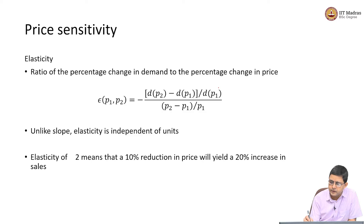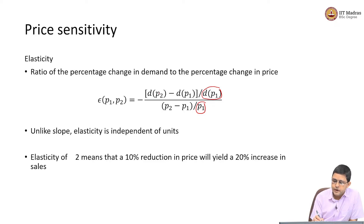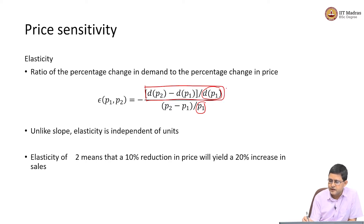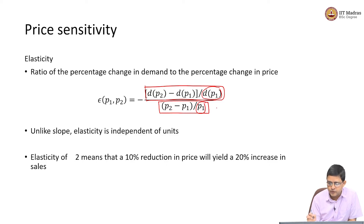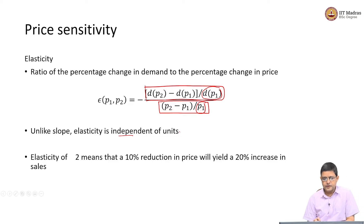To compute elasticity, you divide the numerator by demand at P1, and divide the denominator by price P1. The numerator becomes a unitless quantity because you are dividing demand by demand — the units cancel out. Similarly, the denominator becomes unitless because it is price divided by price. So unlike slope, elasticity is a unitless quantity.